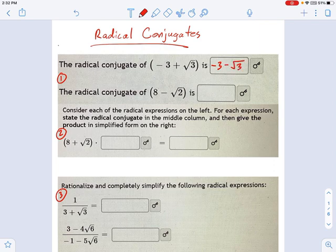And likewise, for this next part, the radical conjugate is going to be 8 plus radical 2 instead of 8 minus radical 2. So that's what a radical conjugate is.